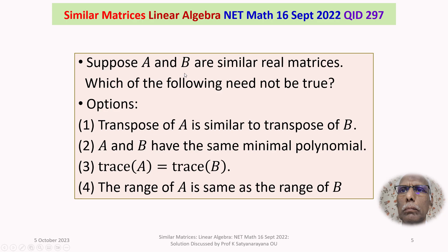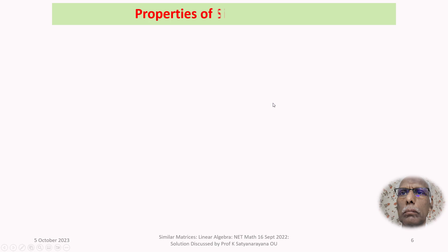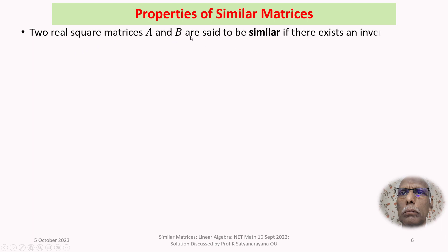We are given that A and B are similar real matrices. Let us review what the properties of similar matrices are. The two real square matrices A and B are said to be similar if there exists an invertible matrix S such that A = S B S⁻¹.